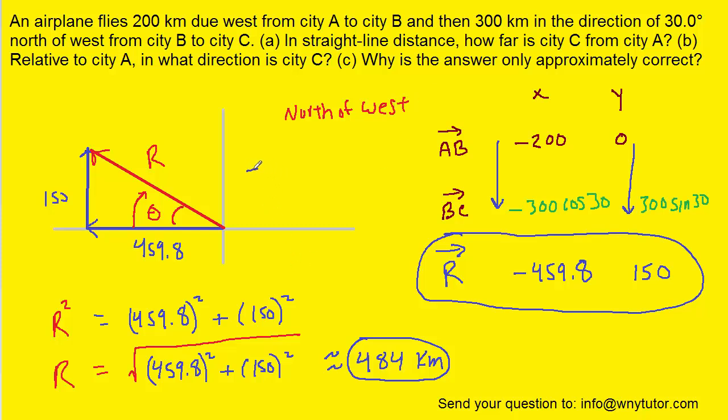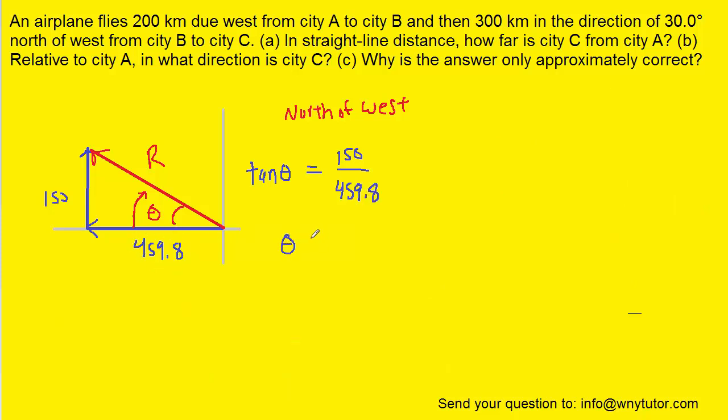Specifically, we can use the fact that the tangent of an angle is equal to the opposite side of that angle, which would be 150, over the adjacent side, which is the 459.8. To actually calculate the angle, we take the inverse tangent of both sides, so the left side just becomes theta and the right side becomes the inverse tangent of 150 divided by 459.8. When we calculate that on our calculator—make sure your calculator is in degree mode—we get approximately 18.1 degrees. So the final answer would be 18.1 degrees north of west.